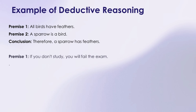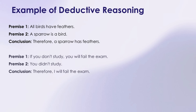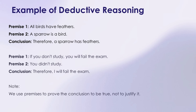Another statement: if you don't study, you will fail the exam. Now, if we know you didn't study, what can we conclude? That's right — you will fail the exam. This is deductive reasoning in action, using established premises to arrive at a conclusion. Note that we use premises to prove the conclusion to be true, not to justify it.